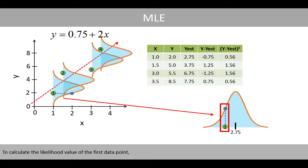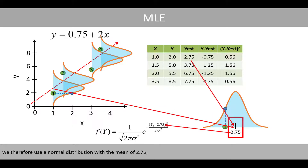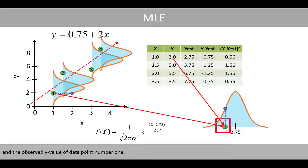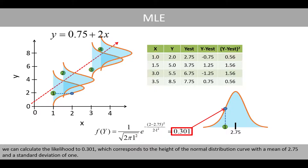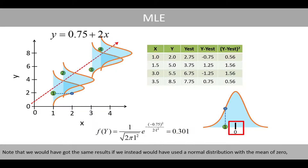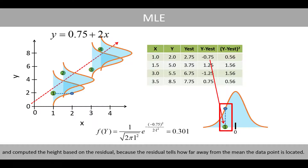To calculate the likelihood value of the first data point, we use a normal distribution with a mean of 2.75 and the observed y-value of data point number 1. For example, if we set sigma to 1, we can calculate the likelihood to 0.301, which corresponds to the height of the normal distribution curve with a mean of 2.75 and a standard deviation of 1. Note that we would have got the same result if we instead used a normal distribution with a mean of 0 and computed the height based on the residual, because the residual tells how far away from the mean the data point is located.